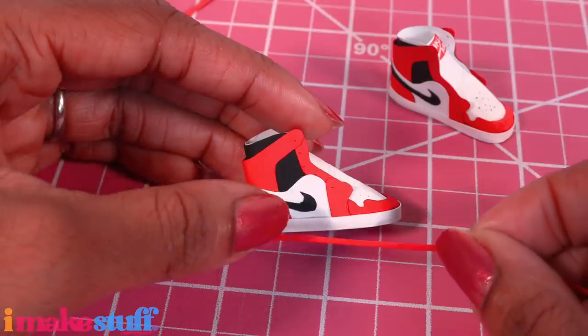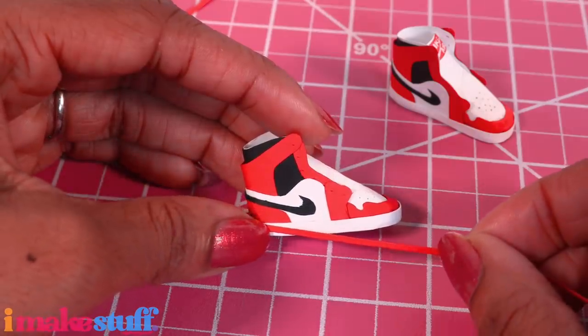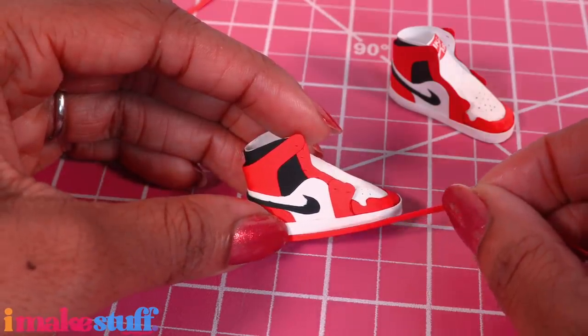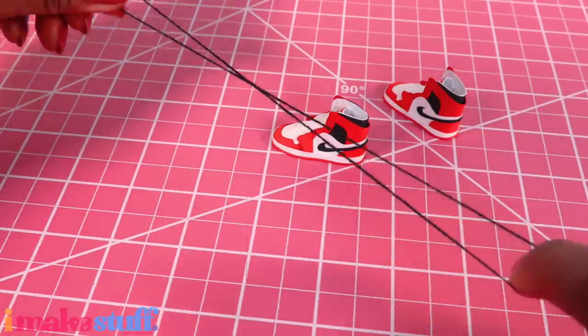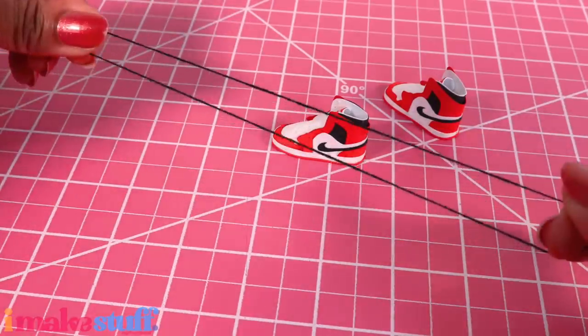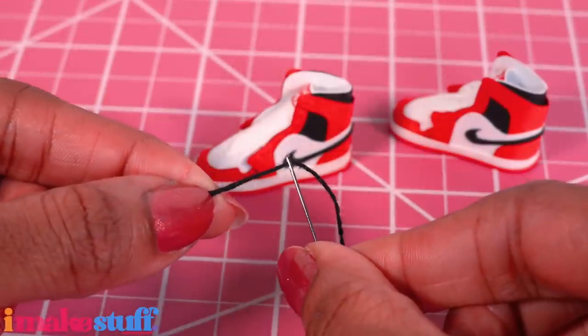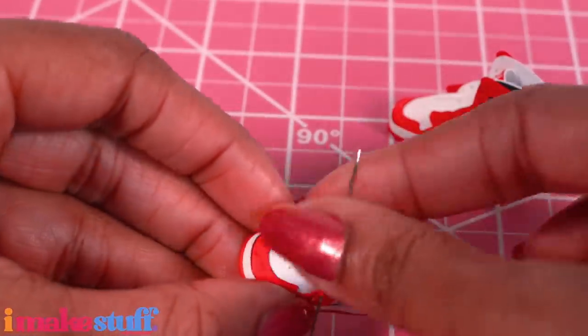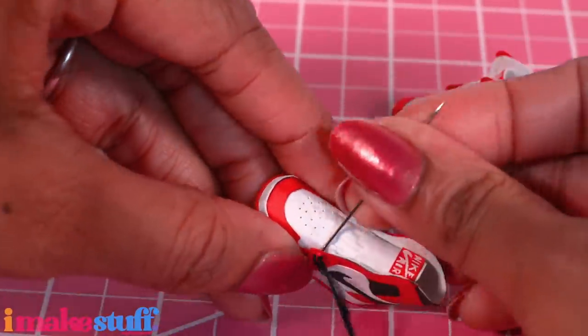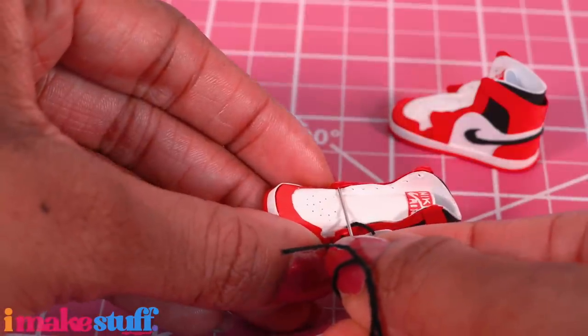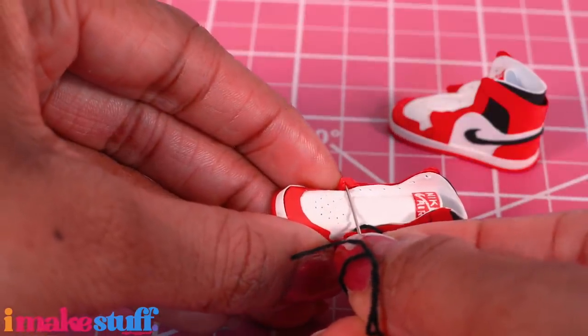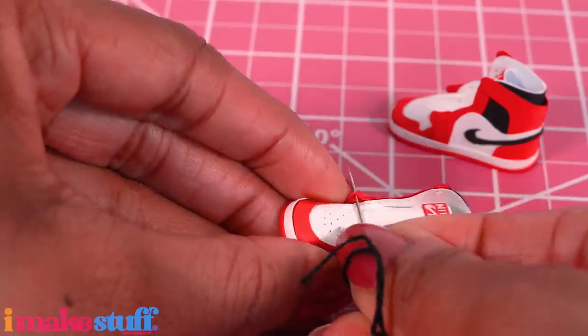All we have left is to put the laces in the shoes. Cut on the glue to separate the two laces. Thread a needle. Go through the little holes we made earlier to lace the shoes. Is that it right there? There we go.